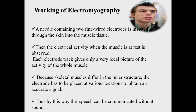In the working of electromyography, a needle containing two fine wire electrodes is inserted through the skin into the muscle tissue. The electrical activity when the muscle is at rest is observed. Each electrode track gives only a local picture of the whole muscle's activity. Because skeletal muscles differ in inner structure, electrodes must be placed at various locations to obtain an accurate signal. By this method, speech can be communicated without sound.